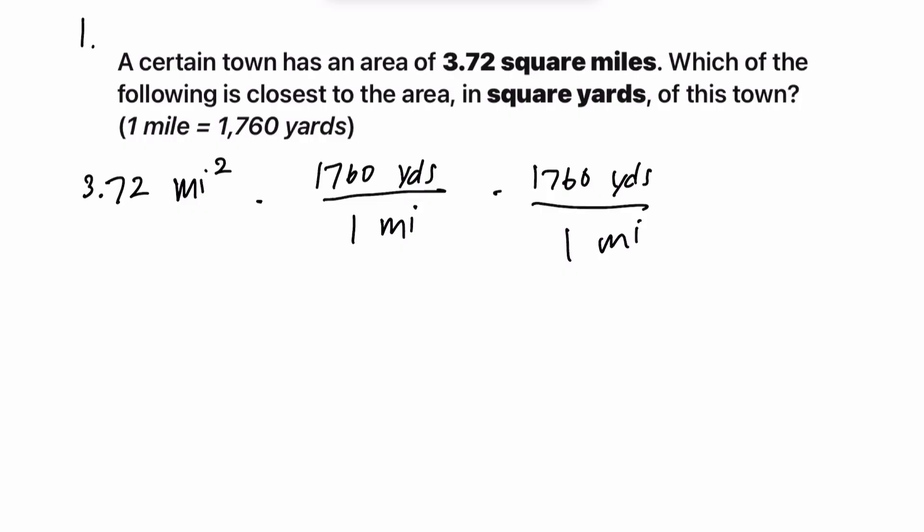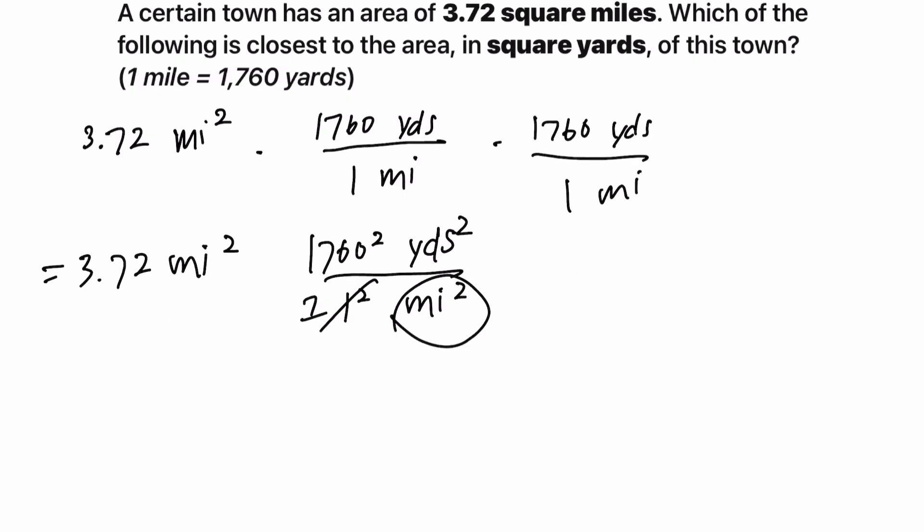The reason why we did that twice is because if we were to multiply these together, what we're going to get is 1760 squared yards squared over 1 squared miles squared. 1 squared is just 1, obviously. What I want you to do is treat these as variables, these units.